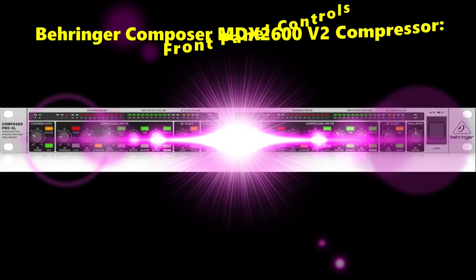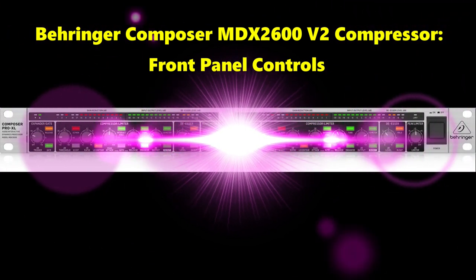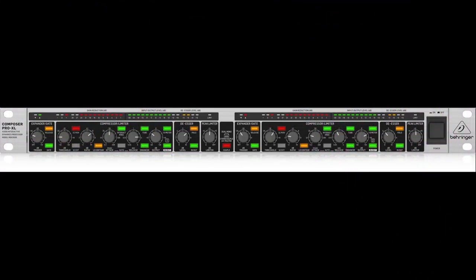Looking at the front panel controls, we start with the couple switch, which links the channels. In couple mode, dynamics are controlled using channel 1 switches and controls whereby the control signal is derived from the energy of both side chain channels, giving you true stereo processing. Next is the trigger control in the expander gate section, which determines the threshold below which expansion sets in, reducing signals below the threshold in gain. The setting range is from off to plus 10 decibels.